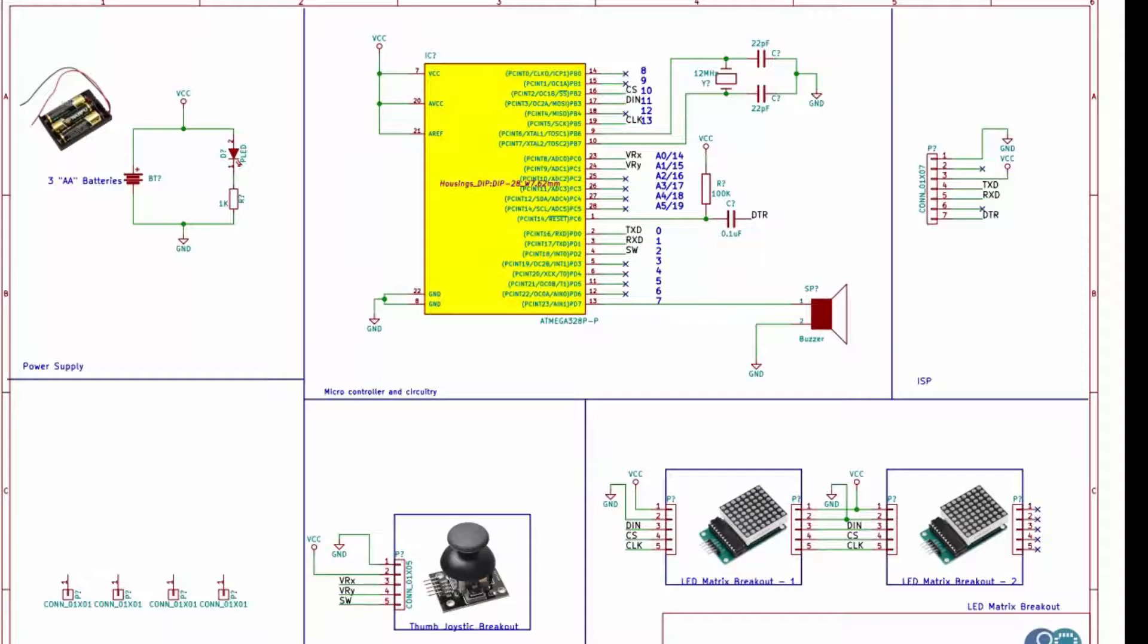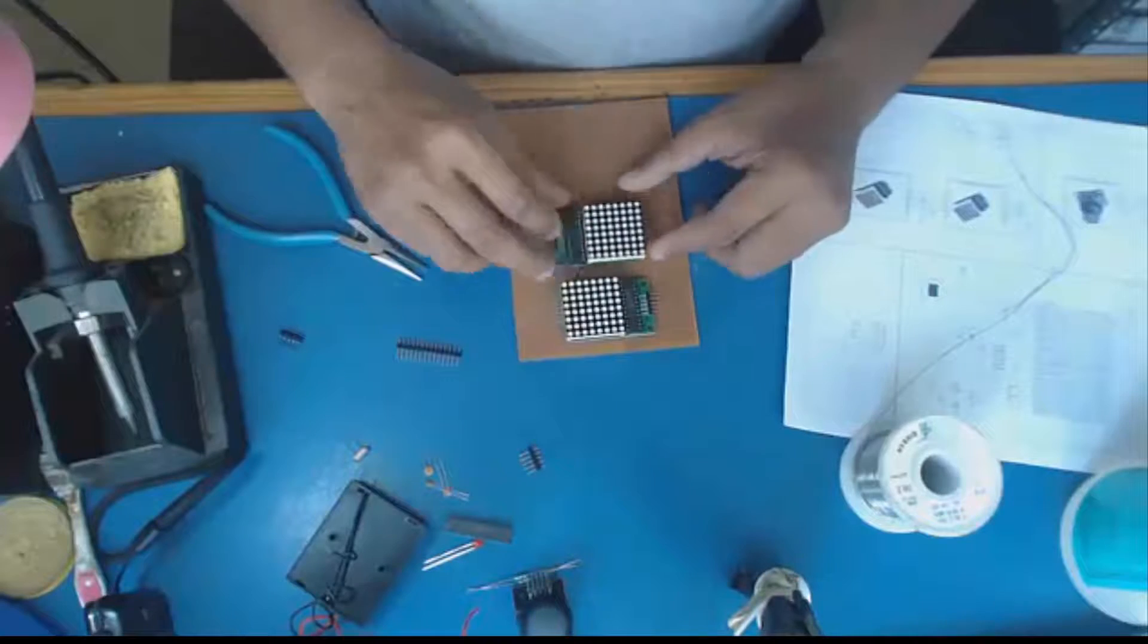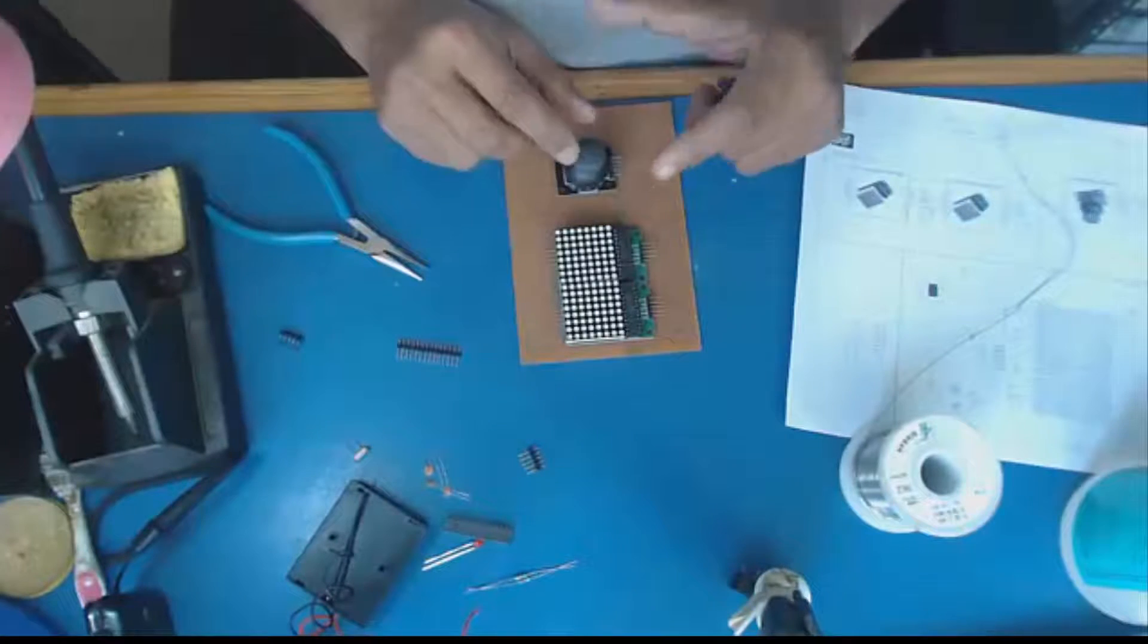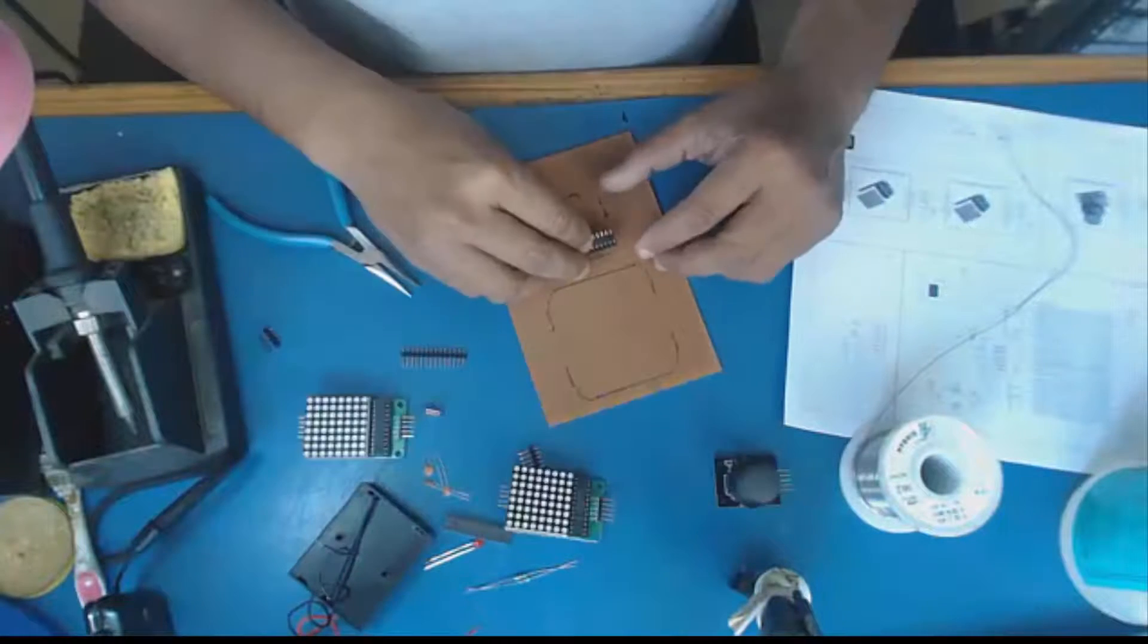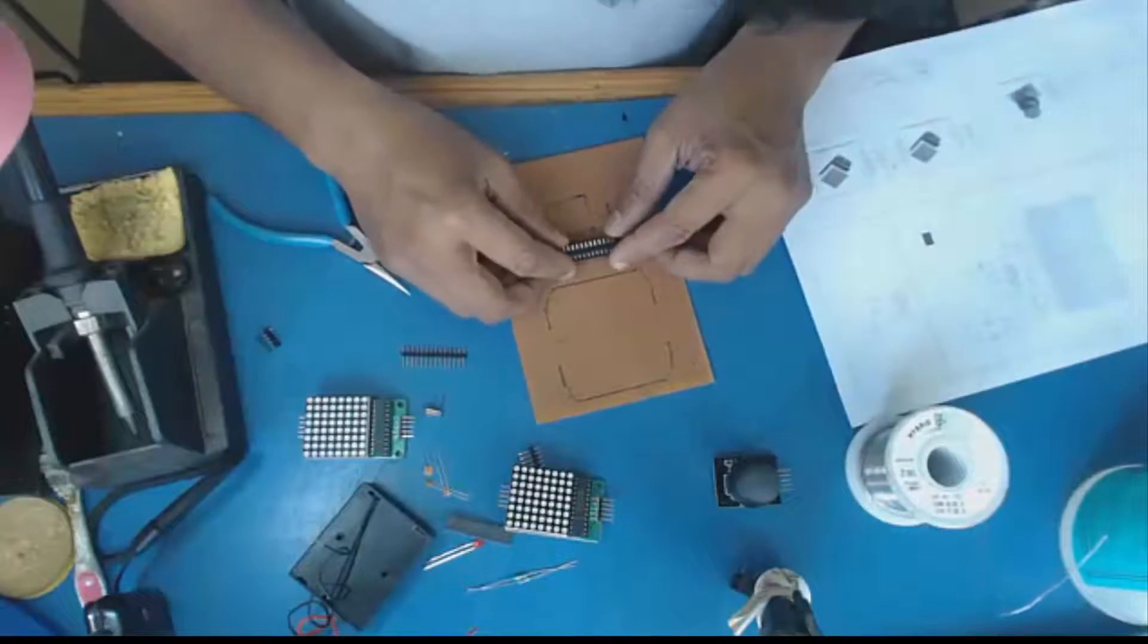Let's start soldering the parts as per the schematic. First I start by placing the parts on the perf board to see how well they fit, then marking out the sizes on the perf board. I start by soldering the IC base for the microcontroller.